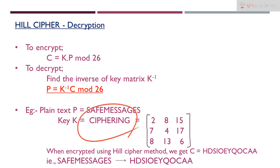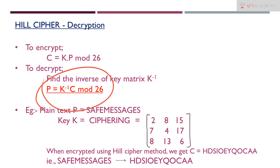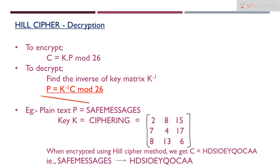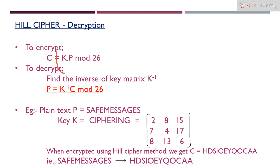To encrypt, the formula was C = KP mod 26, but to decrypt we use this formula. This is the same for all square matrices in Hill Cipher. The formula to find the plain text is P = K⁻¹ · C mod 26. K⁻¹ is the inverse of matrix K, and C is the cipher text.